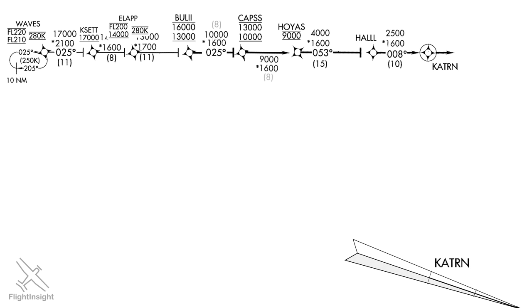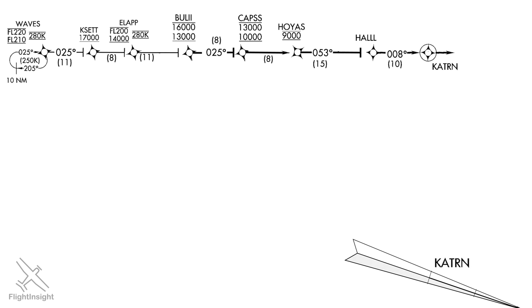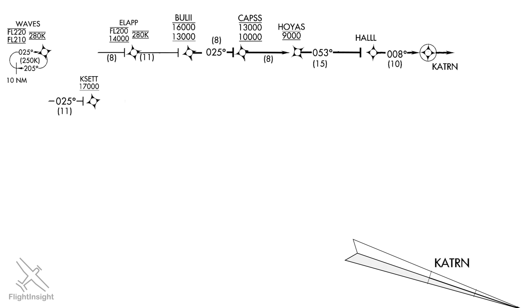Starting from the left, we have the Waves fix, the first on this arrival. We're to arrive at this fix between flight levels 220 and 210. The 280-knot symbol with a bar both above and below means it's a mandatory speed — both a maximum and a minimum. We must be at 280 knots when we arrive at Waves. Speed restrictions like this are designed to enhance the flow of traffic, as aircraft approach from all different directions at different speeds.